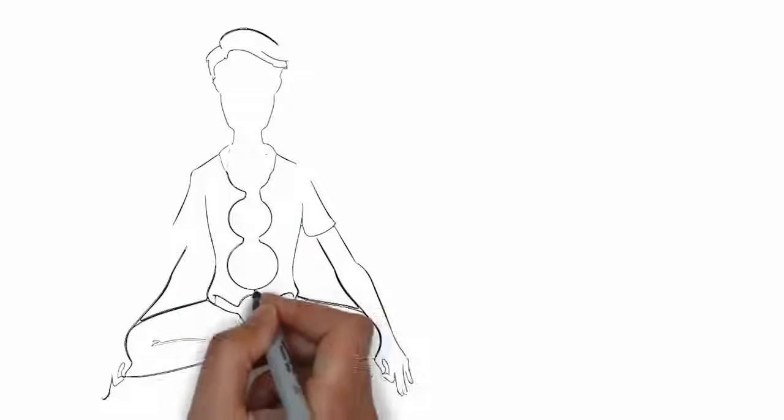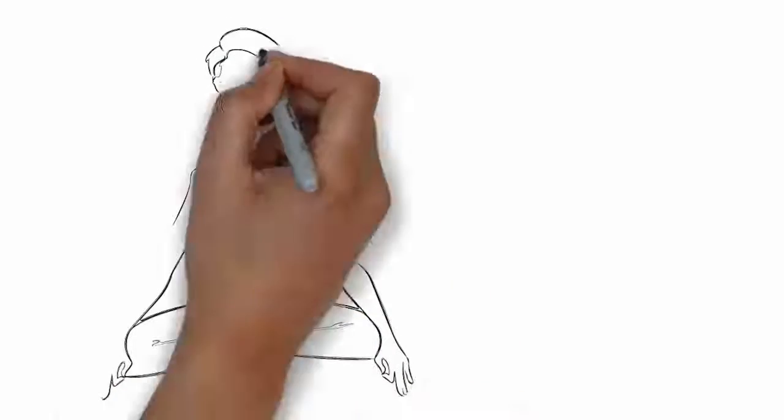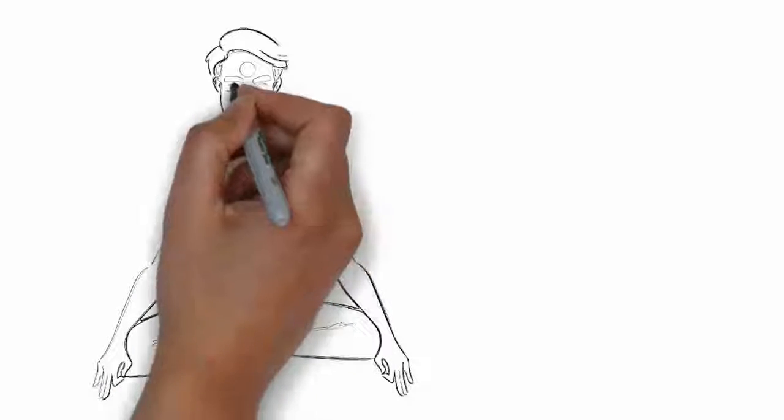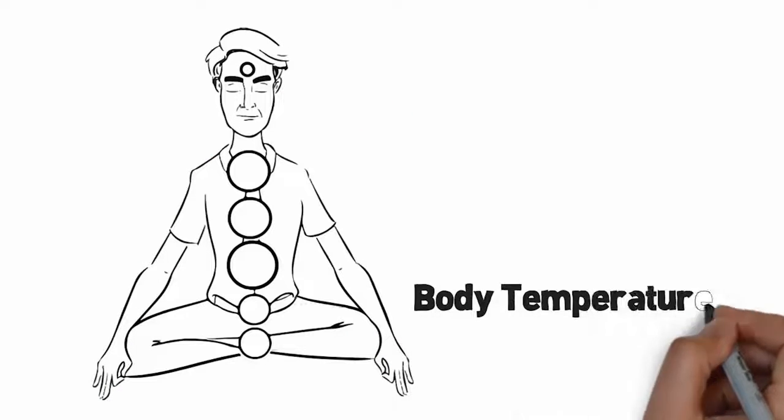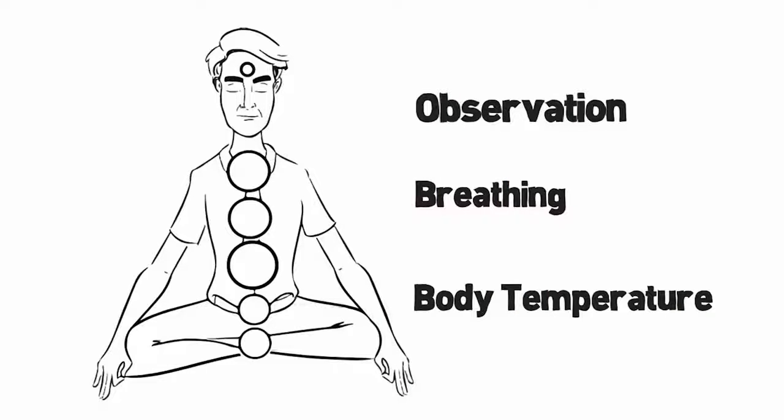In The Solar Body, I narrow down the most important elements of natural health and true happiness into three pillars: body temperature, breathing, and observation.